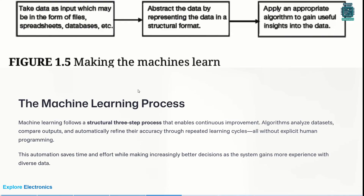What are the steps in making a machine learn? The very first step is to take data as input, which may be in the form of files, spreadsheets, or databases. The second step is to abstract the data by representing it in a structured format so it can be clearly understood by machines. The third step is to apply an appropriate algorithm to gain useful insights from the data.